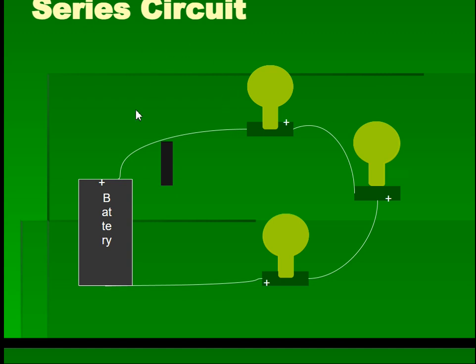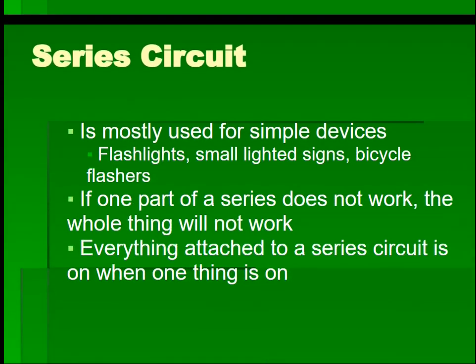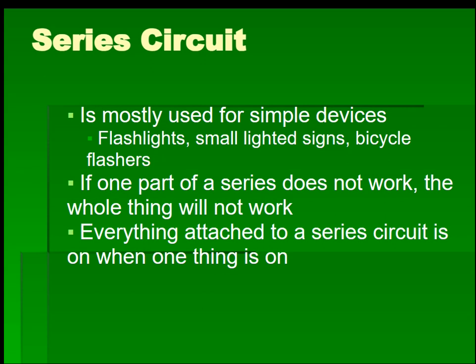As you can see, this is a battery. If I have a current moving right here, it's going to pass through every single circuit component and back to the battery again. Series circuits are mostly used for simple devices — flashlights, small light signs, bicycle flashers. If one part of a series does not work, the whole thing will not work. Everything attached to a series circuit is on when one thing is on. Once something is off, or if there is a short in one of the devices attached to the circuit, the entire circuit will break down and nothing will work.